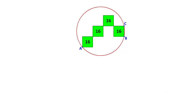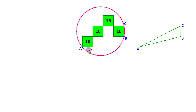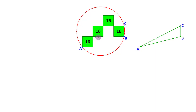Let us start by copying the three points A, B, C forming a triangle. Then let us mark some distances. Each square has area 16 and therefore its side is going to be 4. Now if we start moving from A to B — first vertically 4 units and then horizontally 4 units, 4 units, 4 units, 4 units and 4 units — the distances are 16 in the horizontal direction and 4 in the vertical direction.